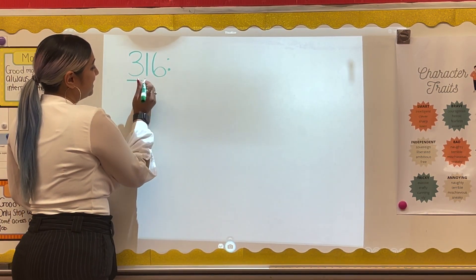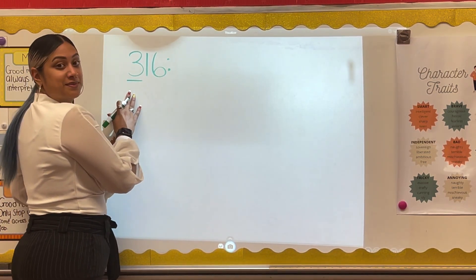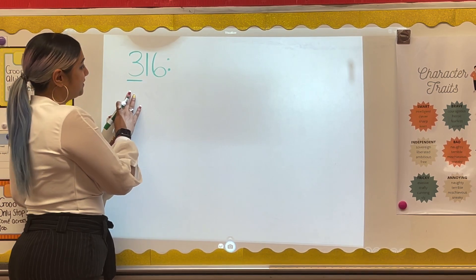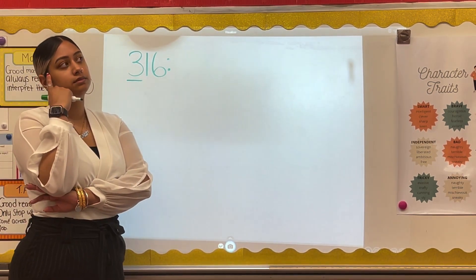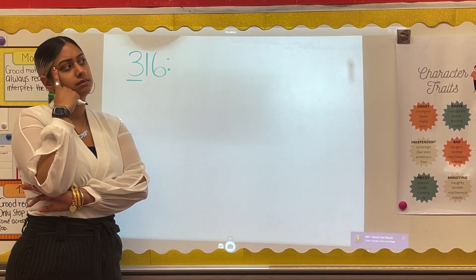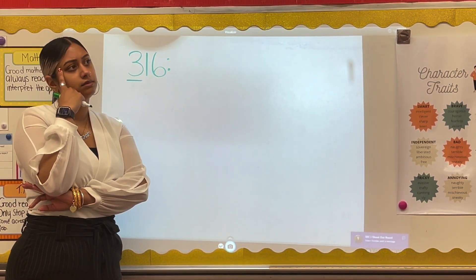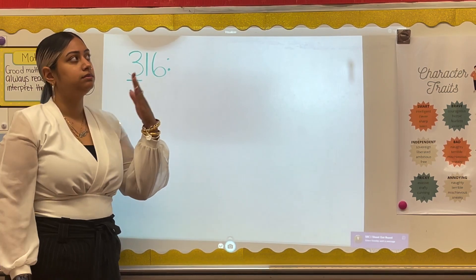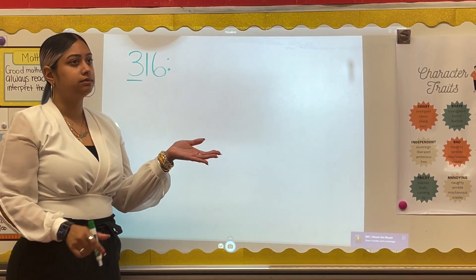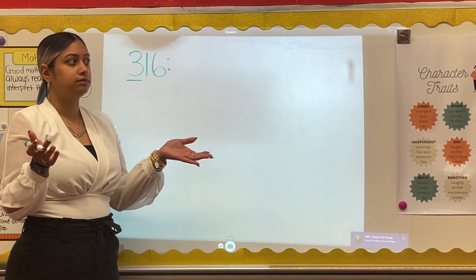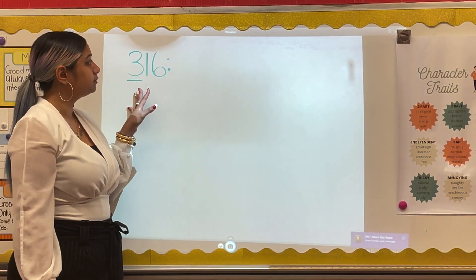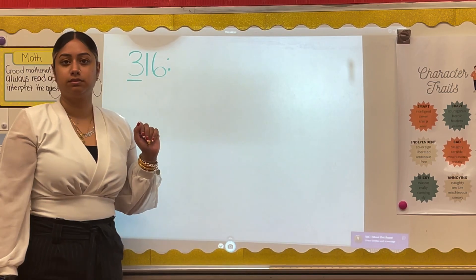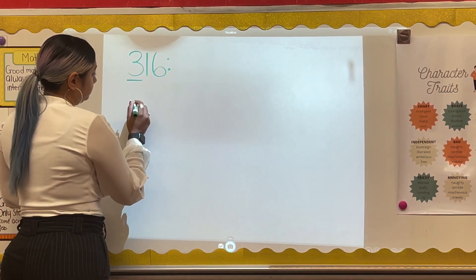Remember, rounding is when we find numbers that are close to the exact number, but easier to work with. Let's start with 316. I first asked myself, what multiples of 100 come before and after the number 316 on a number line?